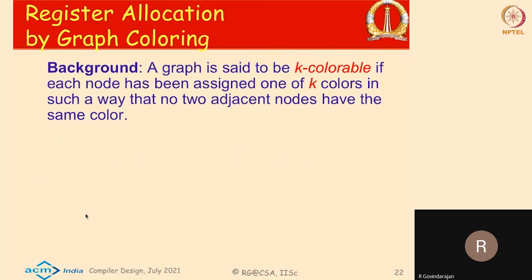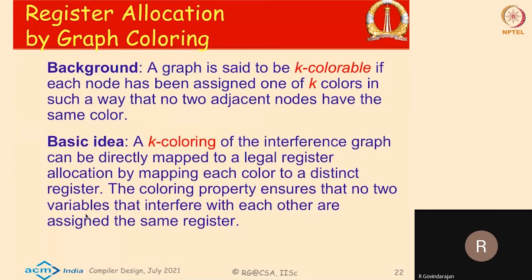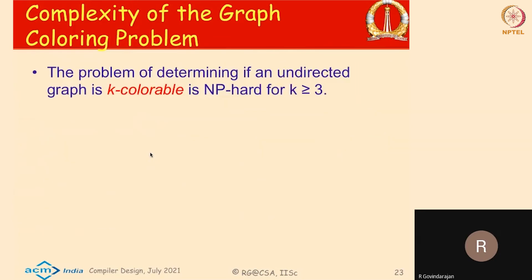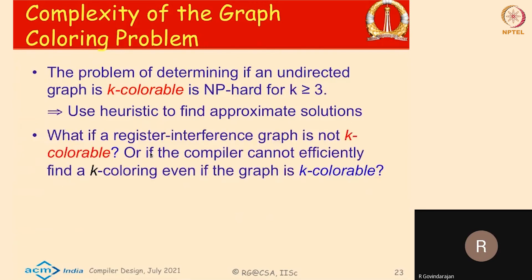A graph is said to be K-colorable if each node can be assigned one of K colors such that no two adjacent nodes have the same color. The K-coloring of the interference graph maps directly to the legal register allocation problem: we give registers to variables, with different registers for conflicting variables and potentially the same register for non-conflicting ones. The problem of whether a graph is K-colorable is NP-hard for K ≥ 3, so heuristics are used.